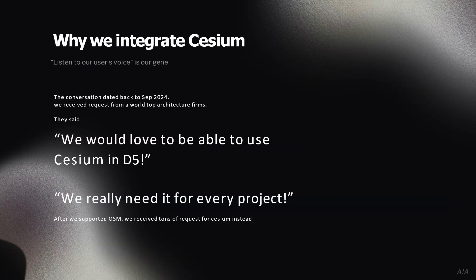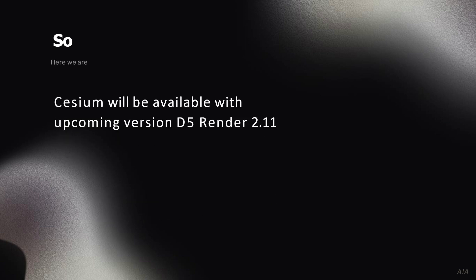So I want to share how we made the decision to integrate Cesium. The conversation started last year. One of the world-leading architecture firms told us they want to use Cesium in all their projects. But at the time we were using the Unreal Engine version, which was quite hard for architects to use. But they were willing to try it — that means Cesium is great. We got more and more requests from our users when we released our OpenStreetMap integration. So we listened. Cesium will be available with our next version, 2.11.